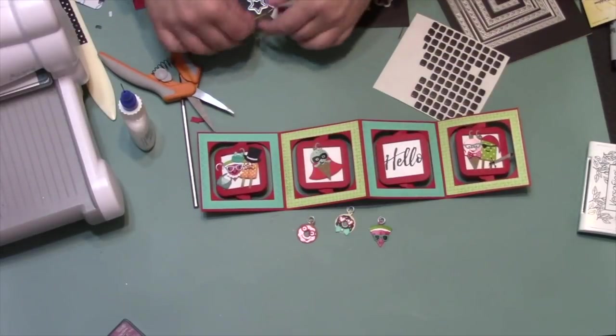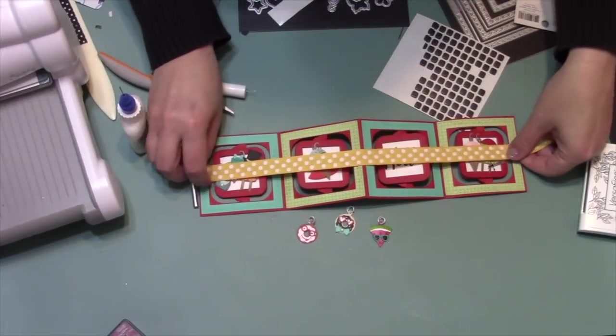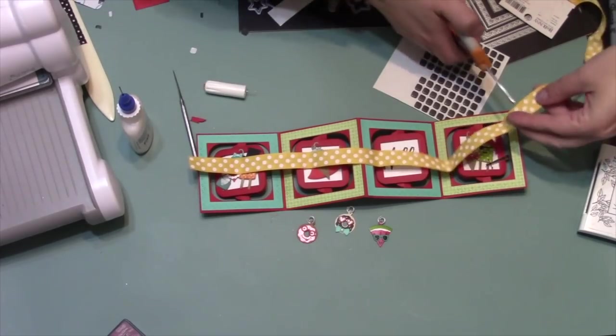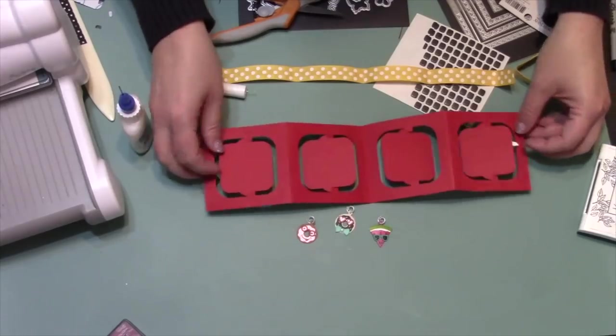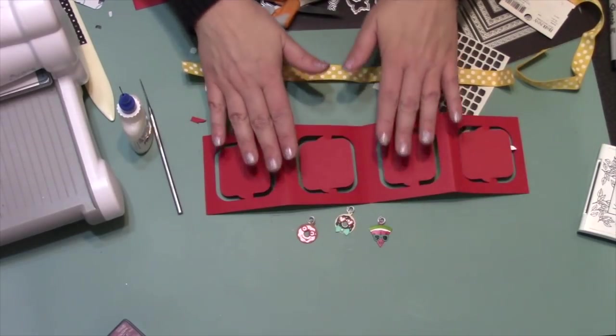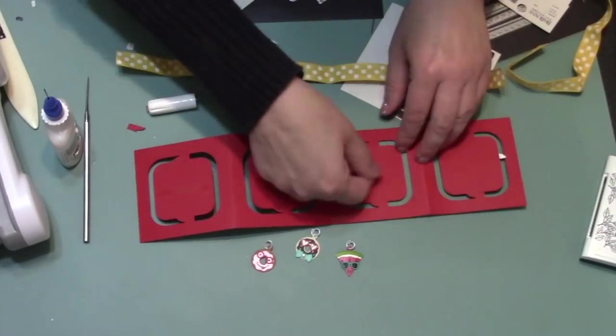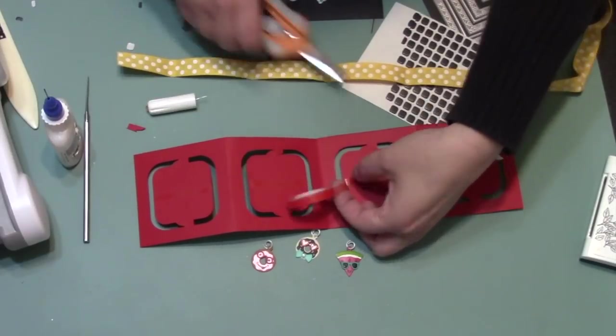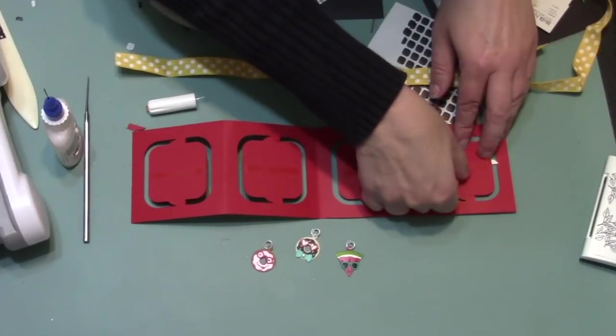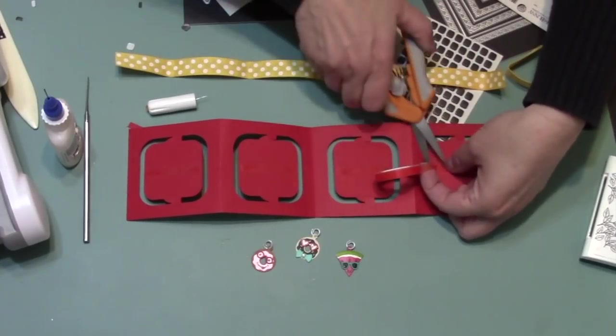In the Charm Accordion die set, there's a little piece that you normally use between the pivoting squares to connect them. But for today's project, I wanted to show another option, which is to use ribbon. So I turn the piece over and I add strips of a red liner tacky tape across the center of each pivoting square.